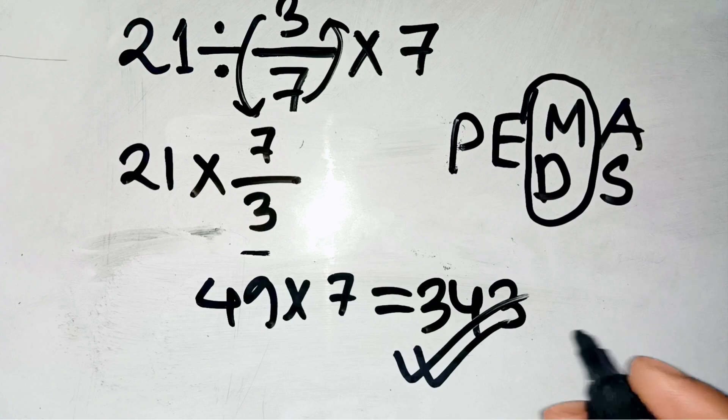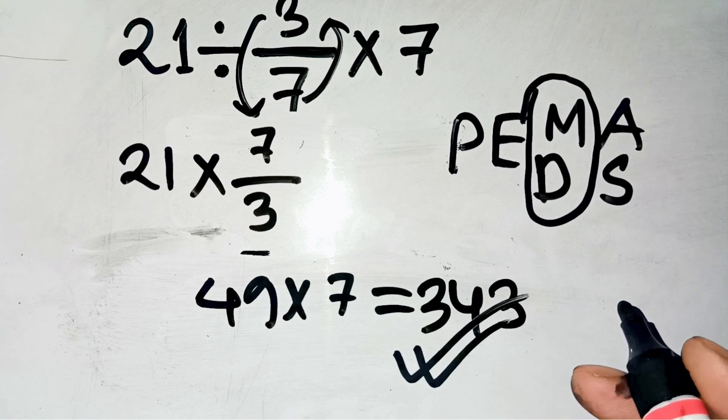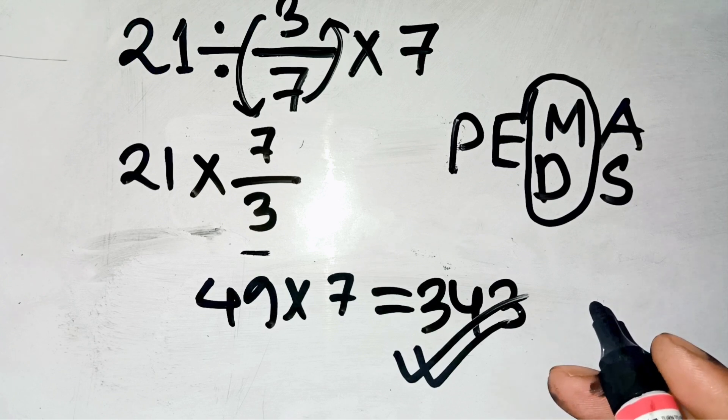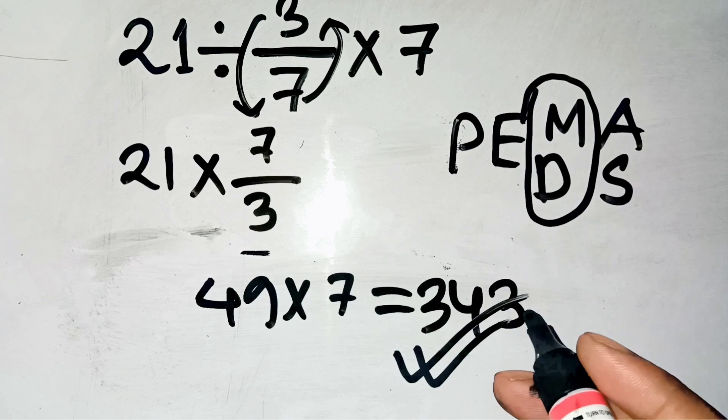Crazy, right? If you don't believe it, just type 21 divided by 3 over 7 times 7 into your calculator and see what happens. If you still have doubts, please write down in the comments. Thanks for watching.